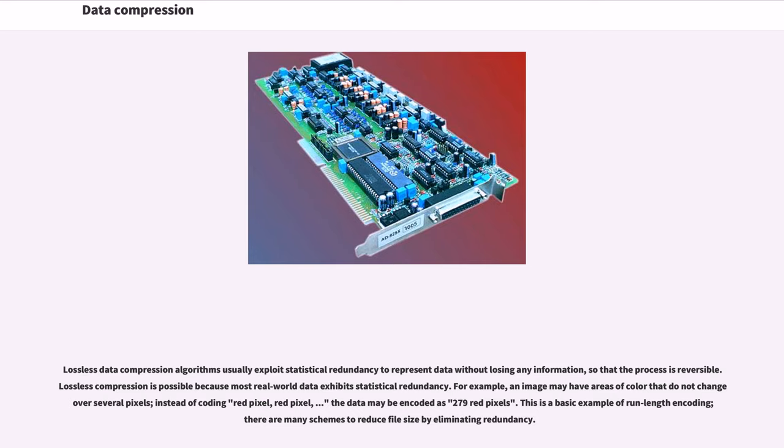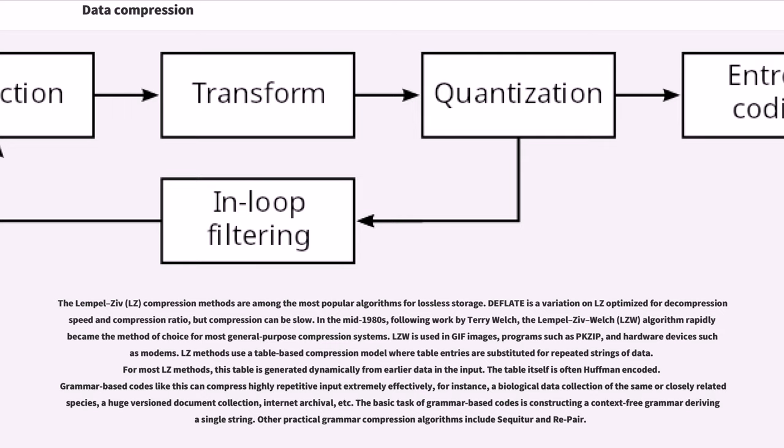This is a basic example of run length encoding. There are many schemes to reduce file size by eliminating redundancy. The Lempel-Ziv compression methods are among the most popular algorithms for lossless storage. Deflate is a variation on LZ optimized for decompression speed and compression ratio, but compression can be slow. In the mid-1980s, following work by Terry Welch, the Lempel-Ziv-Welch (LZW) algorithm rapidly became the method of choice for most general-purpose compression systems.